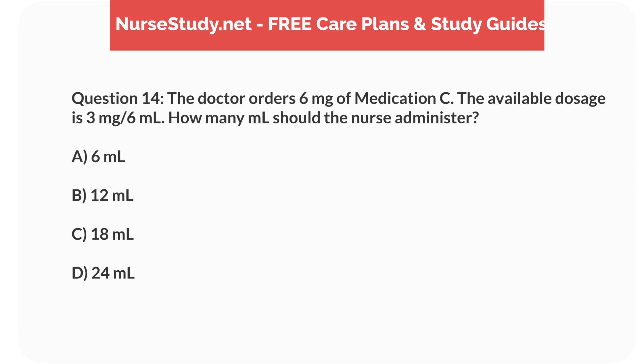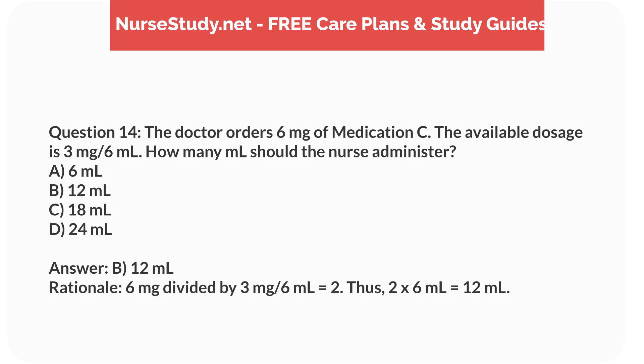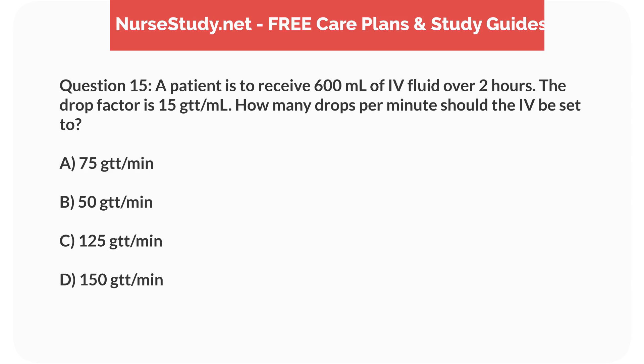Question 14. The doctor orders 6mg of medication C. The available dosage is 3mg per 6mL. How many mL should the nurse administer? a. 6mL, b. 12mL, c. 18mL, d. 24mL. Answer: b. 12mL. Rationale: 6mg divided by 3mg per 6mL equals 2. Thus, 2 times 6mL equals 12mL.